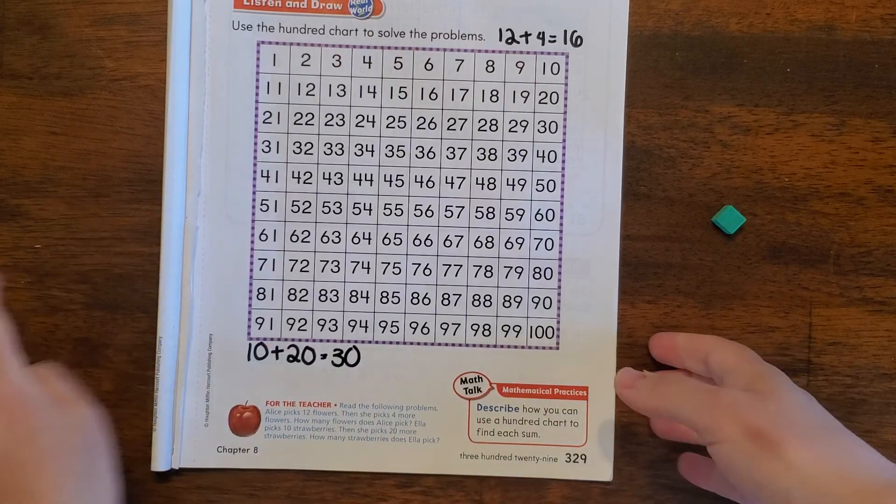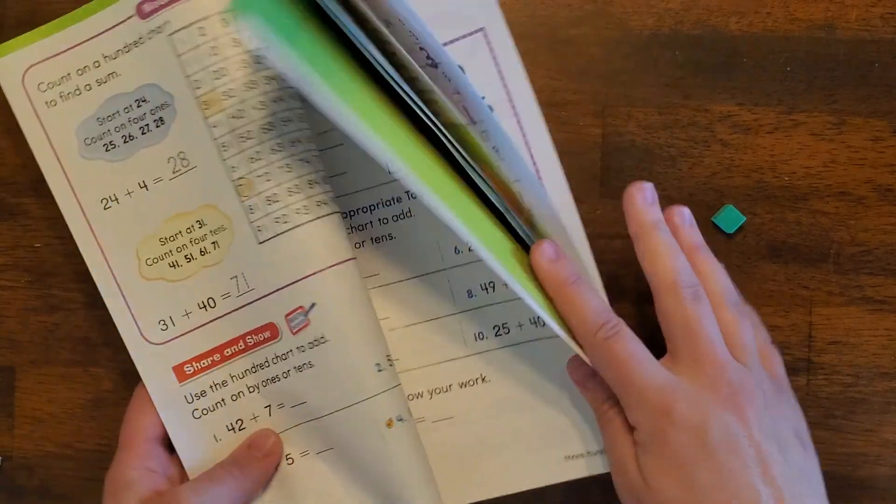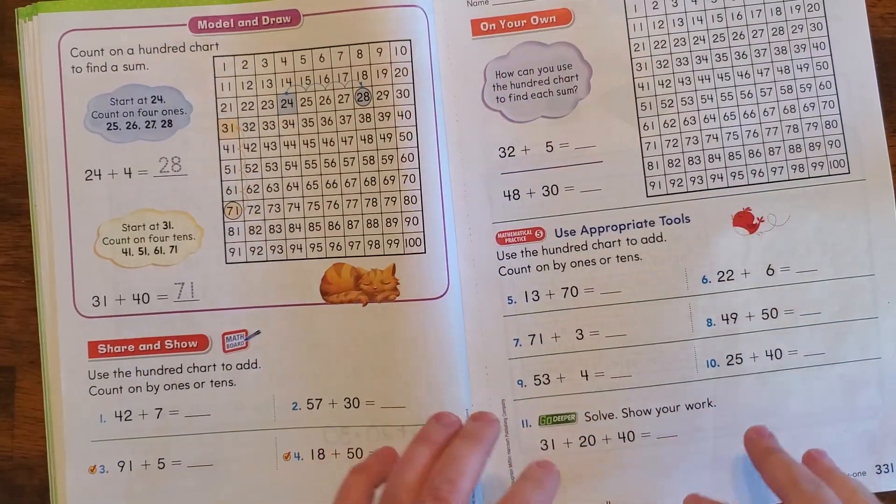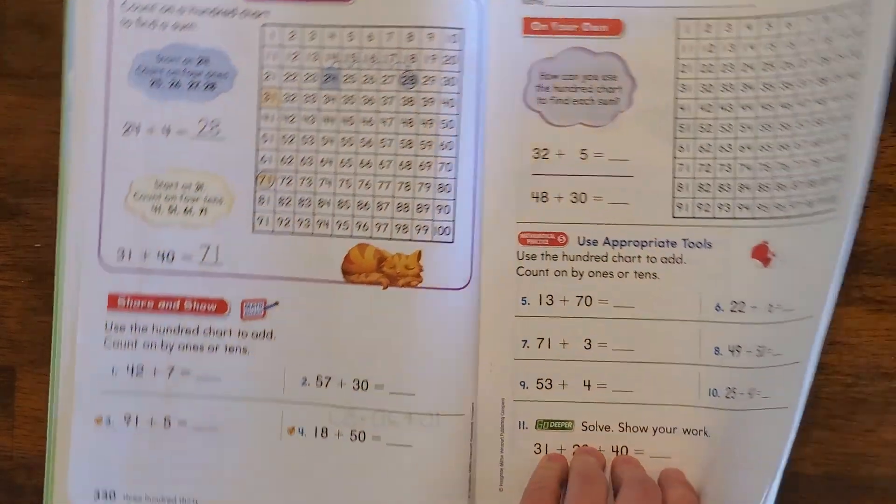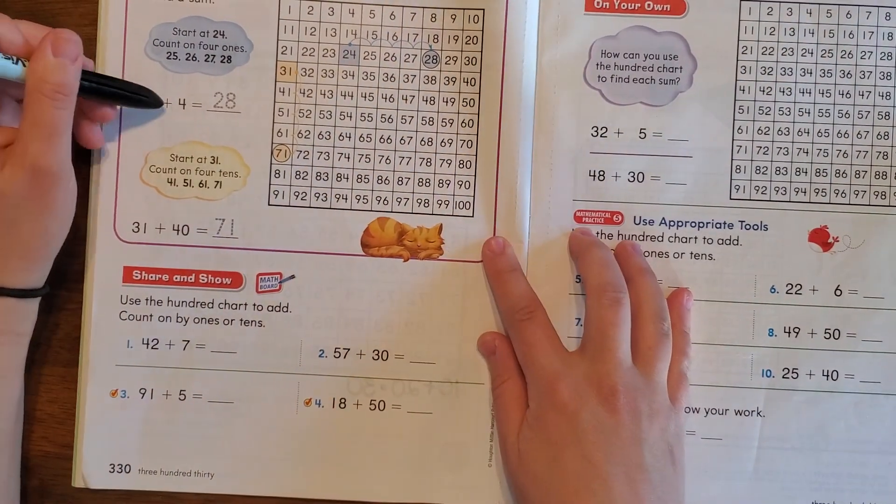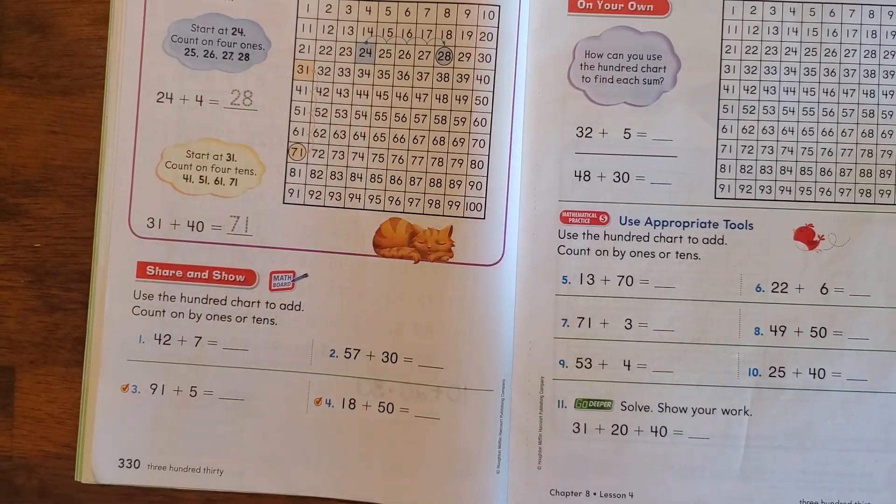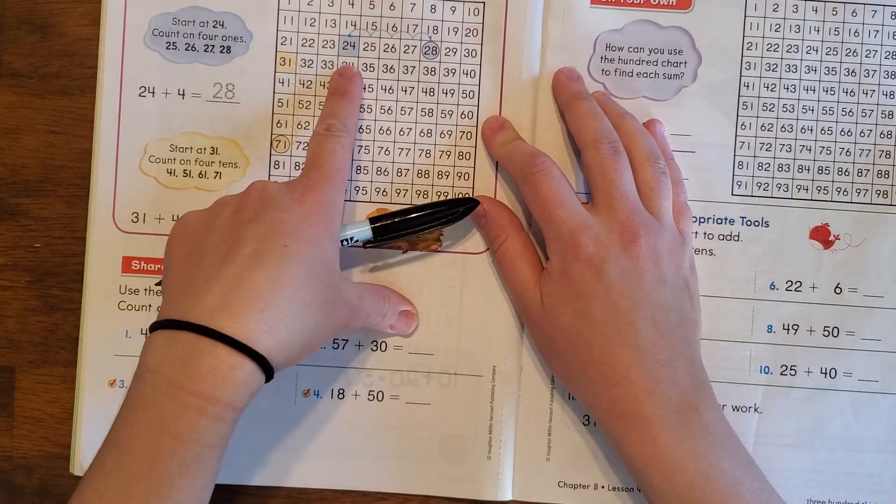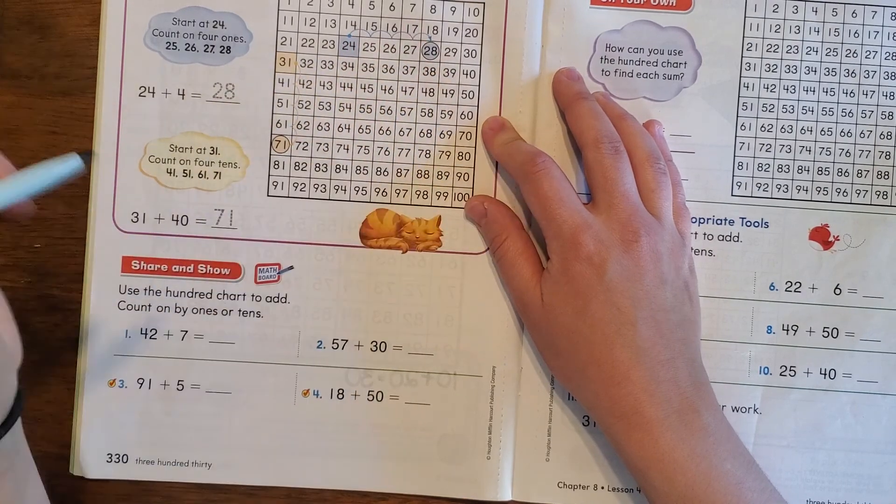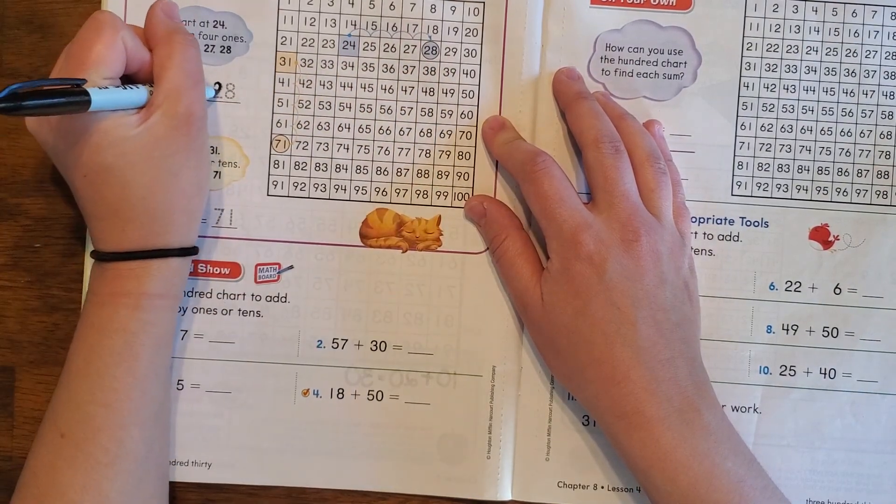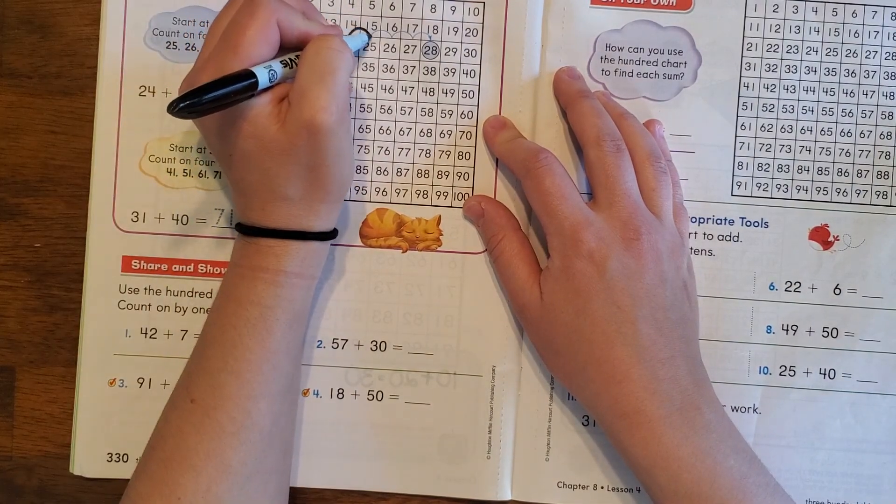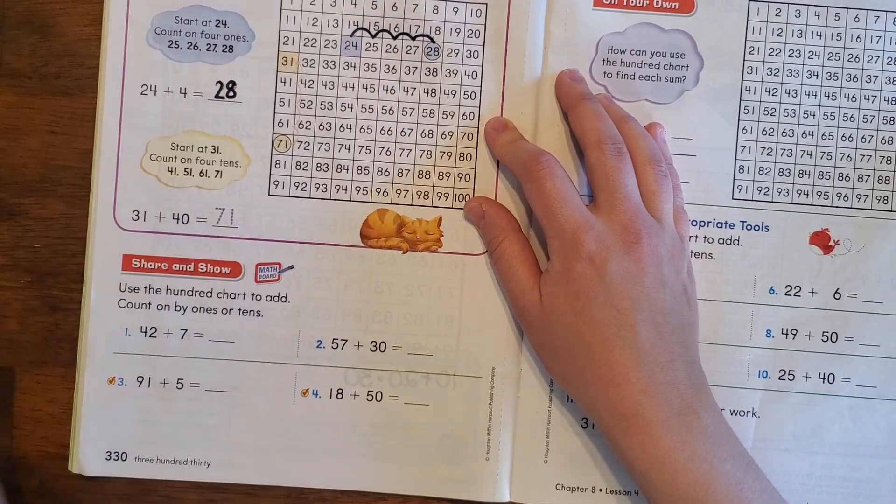All right, so let's go ahead and turn that page. If you look at the model here, they're going to do 24 plus 4. So we would start on the number 24 and then go over four more on the chart: 1, 2, 3, 4, and we end up at 28. And so on your paper you can do that too.